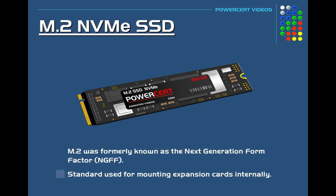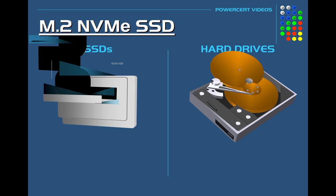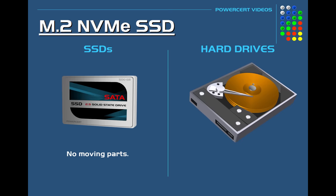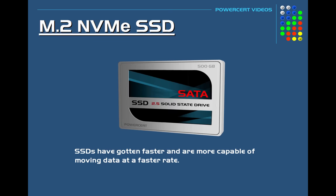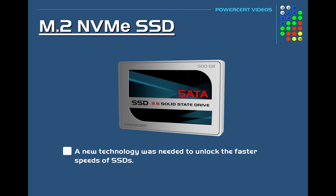SSDs have dramatically surpassed mechanical hard drives in speed because SSDs have no moving parts — they use flash memory for data storage, compared to mechanical hard drives that use rotating magnetic disks. In recent years SSDs have gotten faster and are more capable of moving data at a faster rate, so engineers needed a new technology to unlock the full capability of SSDs.